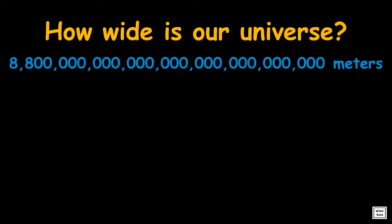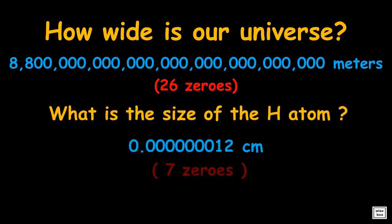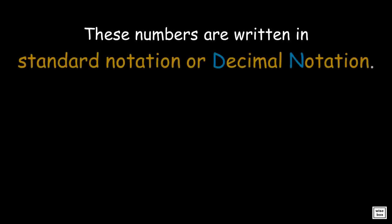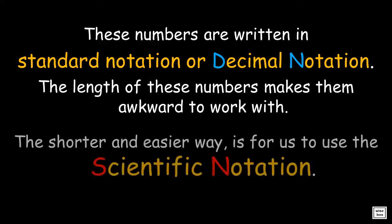Do you have any idea how wide our universe is? This estimation is quite very very large. And do you know the size of the hydrogen atom? It's actually that tiny. These very large and very small numbers are written in standard notation, or decimal notation. The length of these numbers makes them awkward to work with. However, we can use the shorter and easier way — the scientific notation.